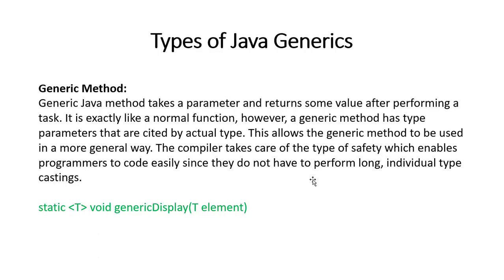Generics Java method takes a parameter and returns some value after performing a task. It is exactly like a normal function. However, a generics method has type parameters that are cited by actual types. This allows the generics method to be used in a more general way.